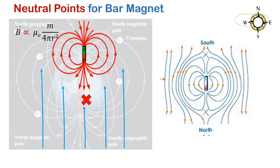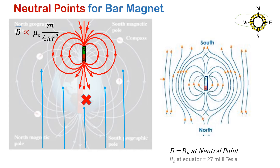The magnetic field intensity of a magnet varies inversely with the square of the distance from the magnet. So at a certain point, the magnetic field intensity of the magnet becomes equal in magnitude and opposite to the earth's magnetic field, producing a neutral point. The horizontal component of the earth's magnetic field is roughly equal to 27 milli-tesla.